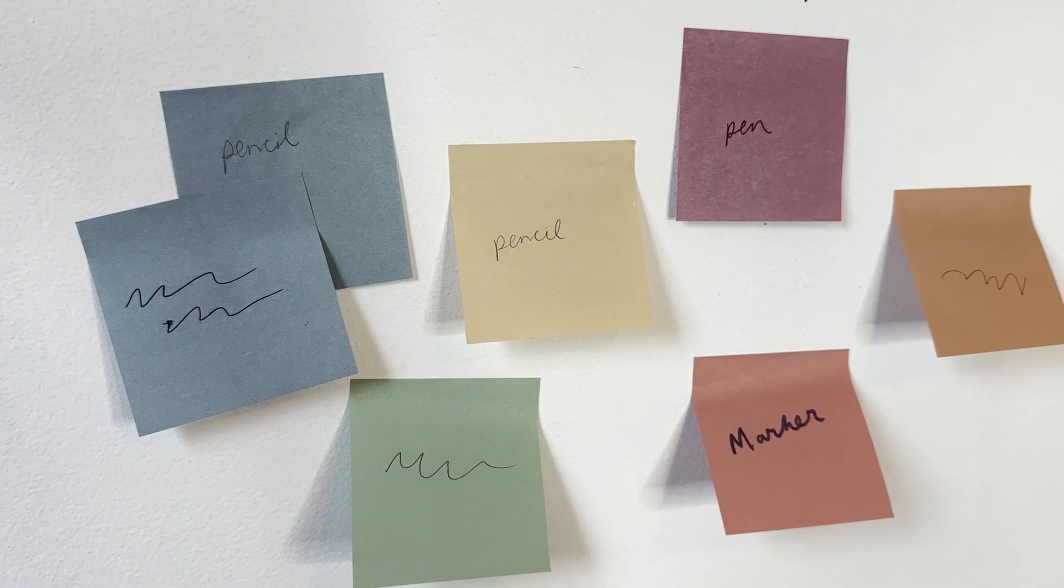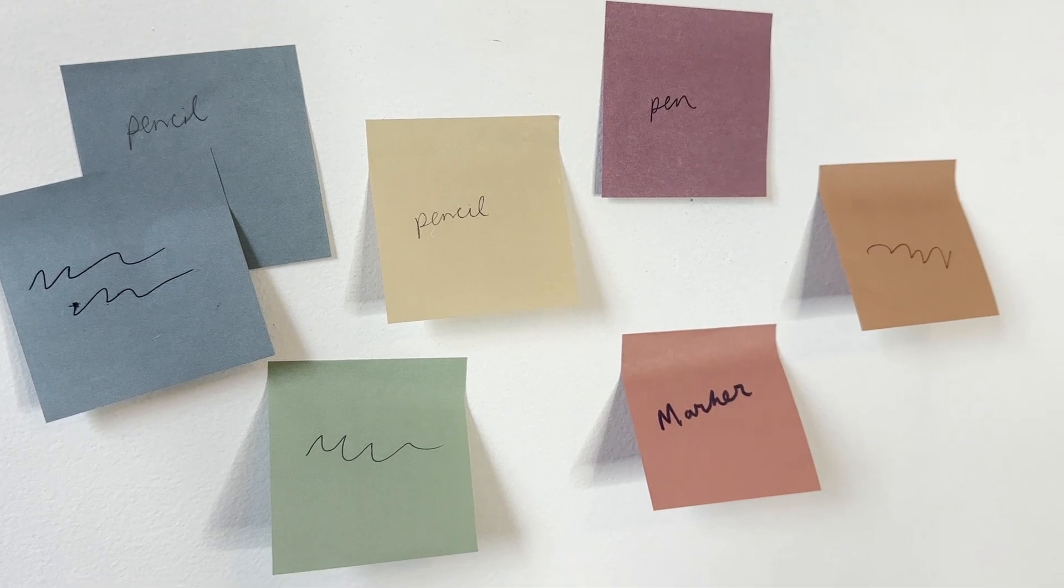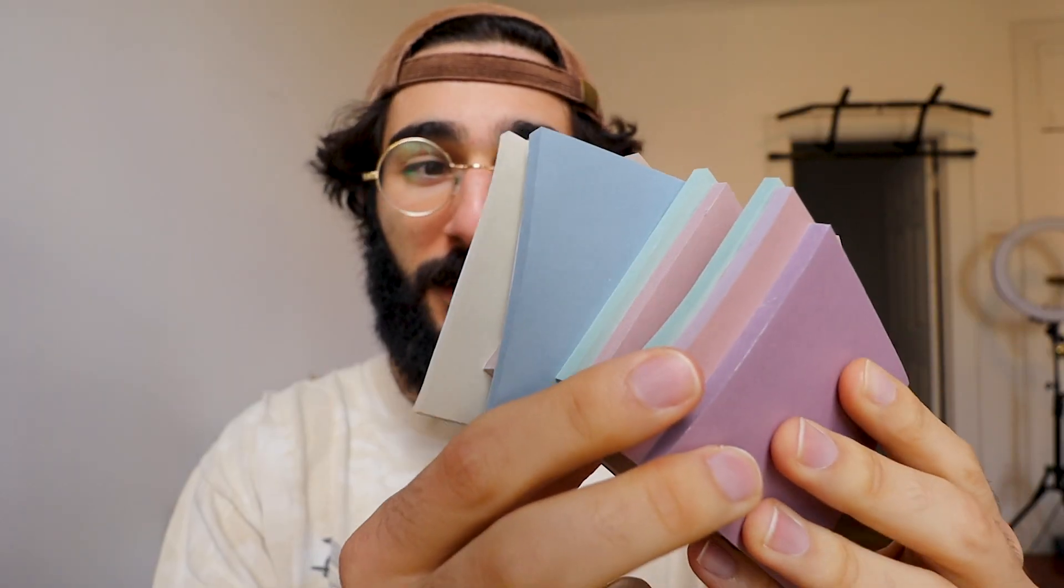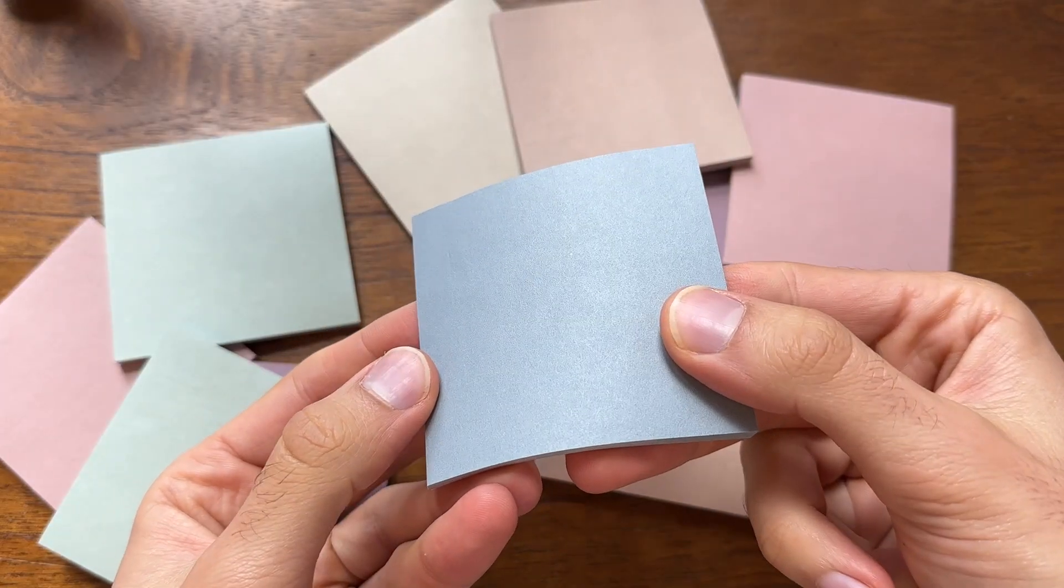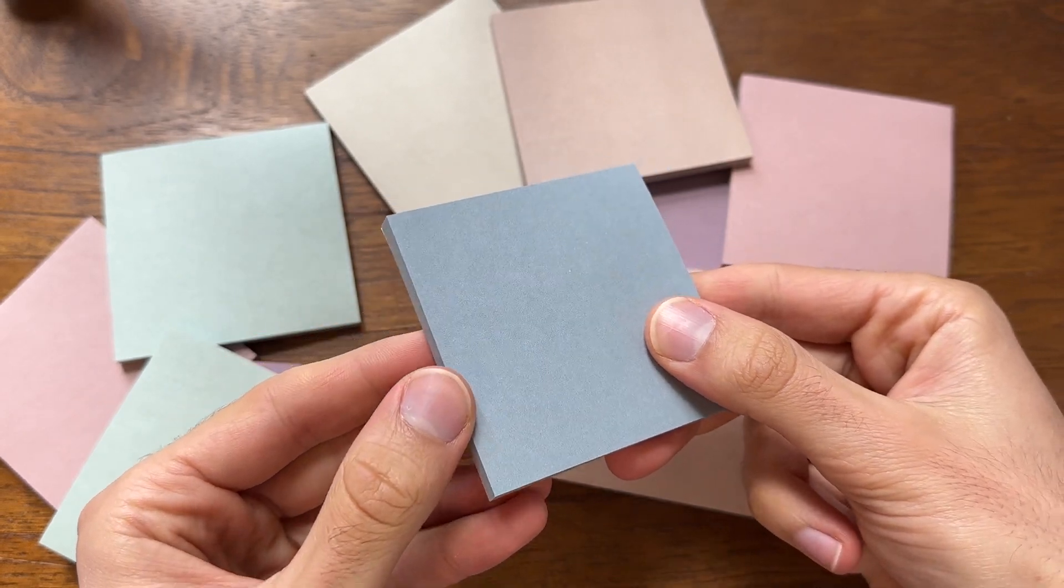I use post-it notes all the time, I stick them all over the wall, so I wanted a really aesthetic color. The color palette on these, as you can see, is super pretty. Nice neutral tones, kind of earth toned, very subtle, kind of dull and muted, which I think is a nicer aesthetic than the bright neon post-it notes.